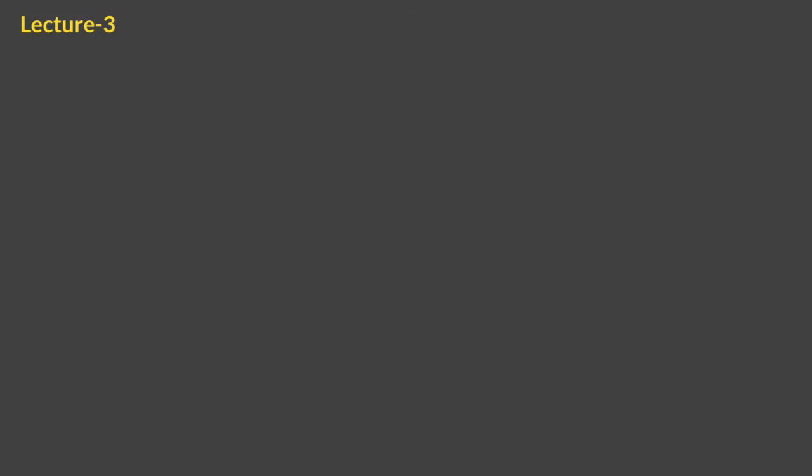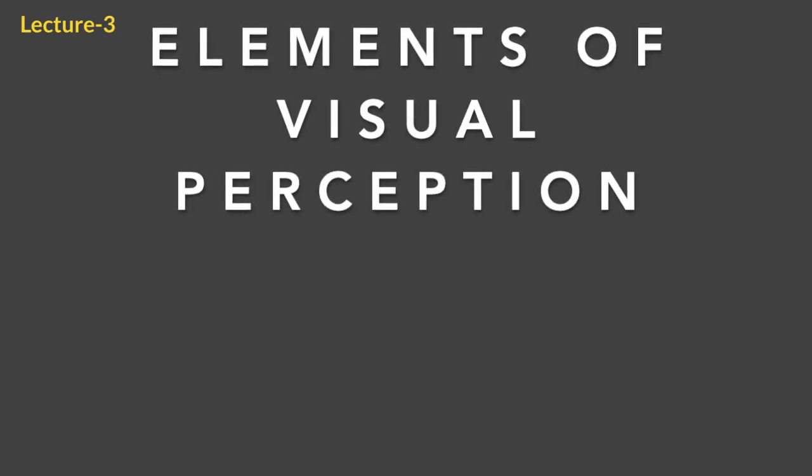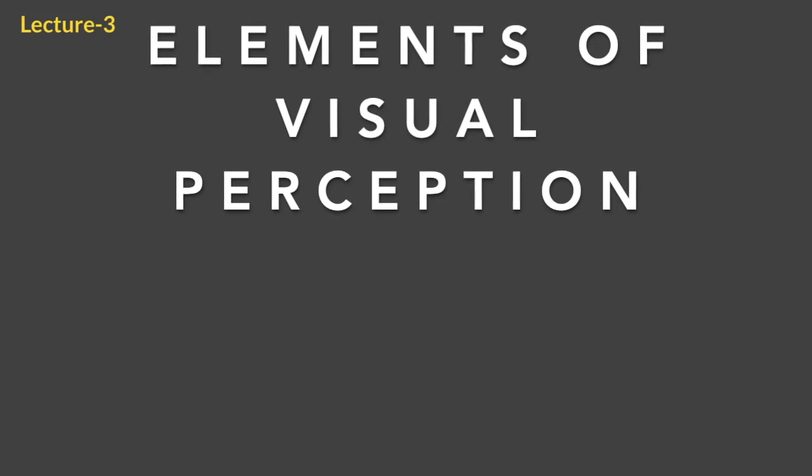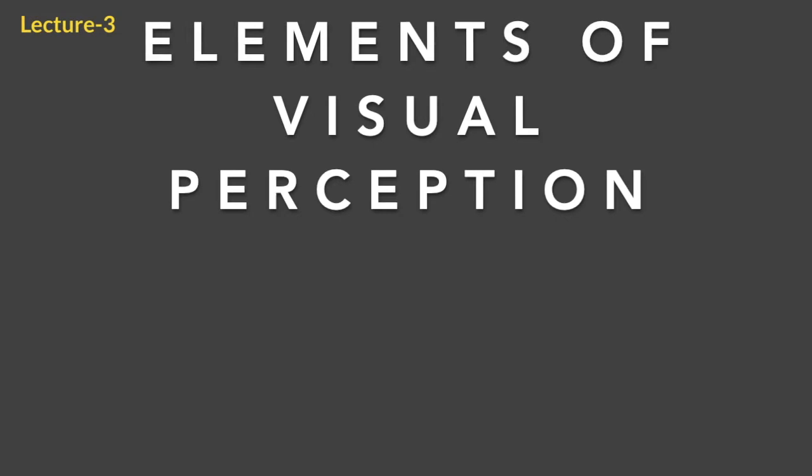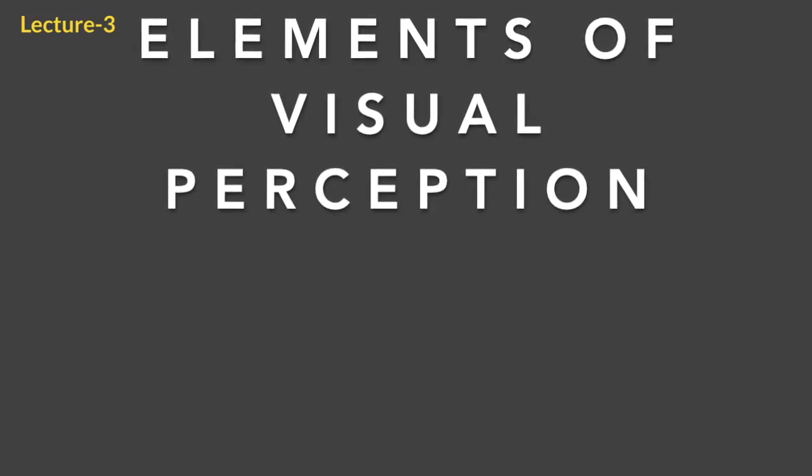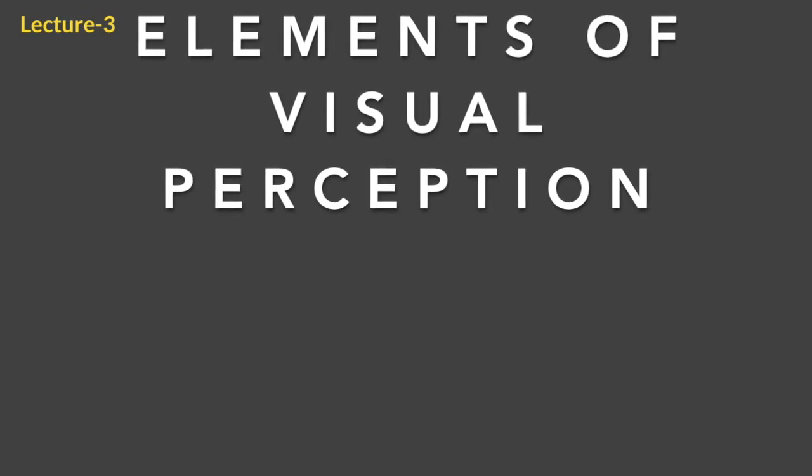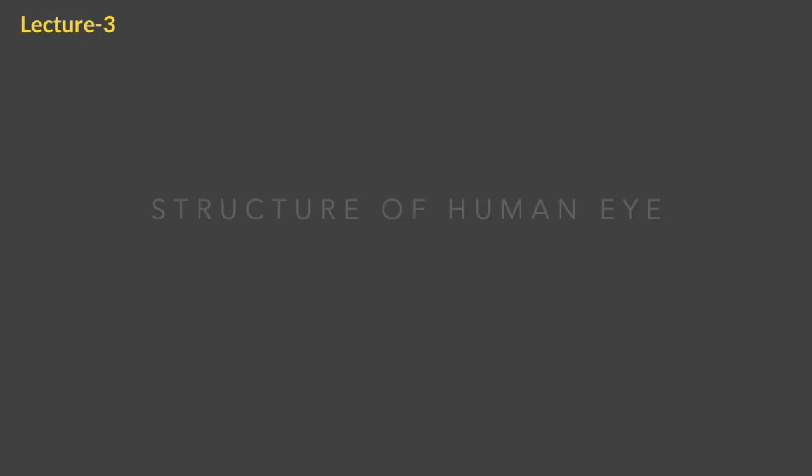In this video we are going to talk about elements of visual perception. Even if digital image processing is built on the foundation of mathematics, how humans perceive images plays a very important role in analyzing those images and making judgments about processing. Hence it is very important to understand how human visual perception works. For that, first we will be starting with structure of the human eye.